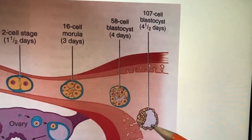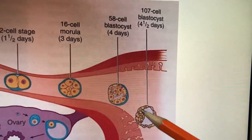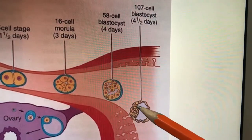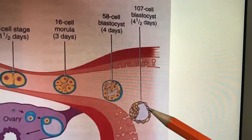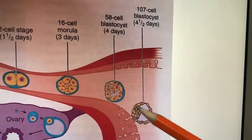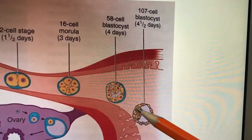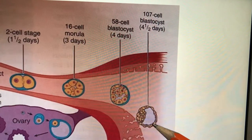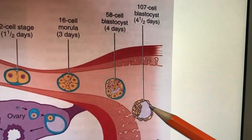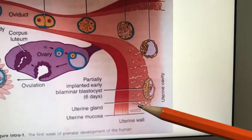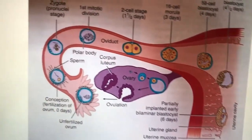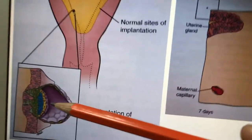When the fluid increases, the cells accumulate towards one end — this is called the embryoblast. The rest of the cells line the blastocyst cavity — that is called the trophoblast. The inner cell mass is called the embryoblast and the outer cell mass is called the trophoblast. Next, it gets implanted into the uterine endometrium.